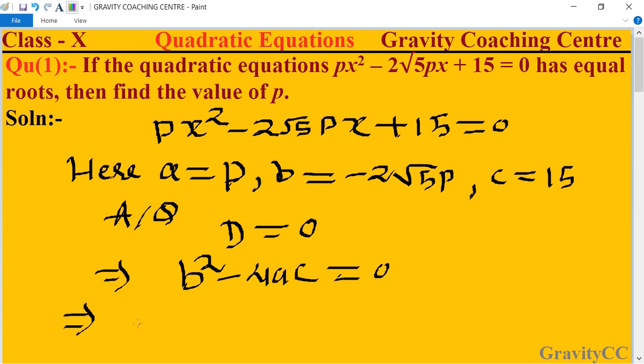Now we put the values of a, b, c in this equation. The value of b is (-2√5p)² minus 4 times a which is p, and c = 15, so equal to 0.